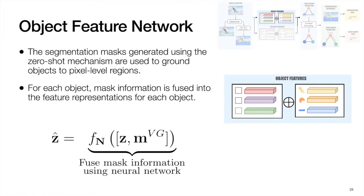As the transfer mechanism can be used for objects in the scene graph dataset, the segmentation masks consequently obtained are used to ground objects to pixel-level regions. A segmentation-aware representation is obtained by combining the object features and corresponding zero-shot masks using a neural network.